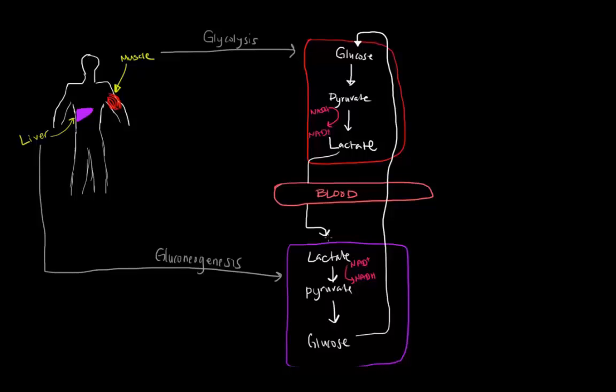Now when that lactate gets to the liver, it's going to be turned back into pyruvate and that pyruvate will, for every two pyruvate there are, you're going to take those and turn them back into glucose. Now once you've created that glucose, the liver can then dump that into the blood and the blood can carry that glucose back to the muscle cell and the muscle cell can have another glucose that it can break down.